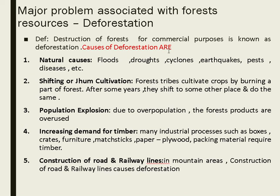The major problem associated with forest resources is deforestation. Natural causes include floods, droughts, cyclones, earthquakes, and diseases. Manmade causes include shifting or jhoom cultivation — where crops are cultivated by burning part of the forest, then shifting to another place — and population explosion, which increases demand for forest products.